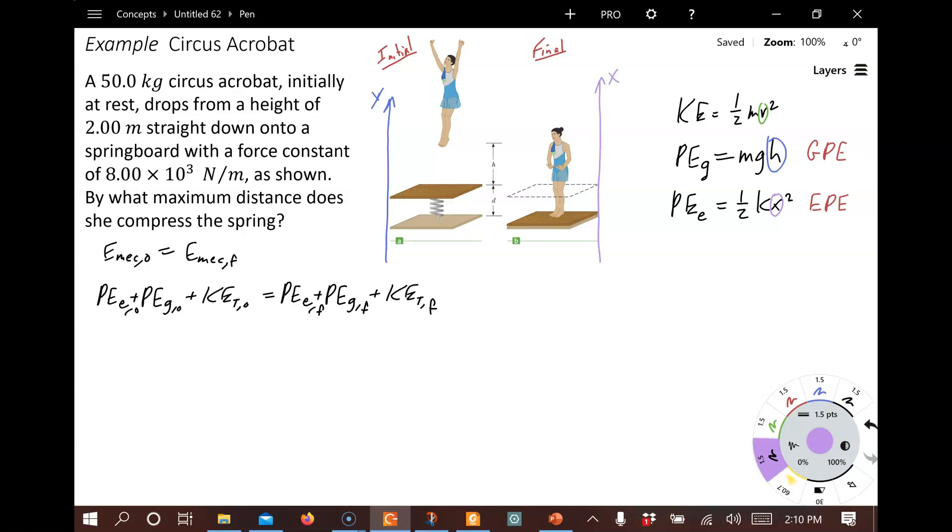And for the spring, you have no choice of where the zero position's got to be. It's got to be when the spring is at its equilibrium position. So here's equilibrium position. The spring is in equilibrium when it's at this length. And so this is going to be our origin, x equals zero for the spring.